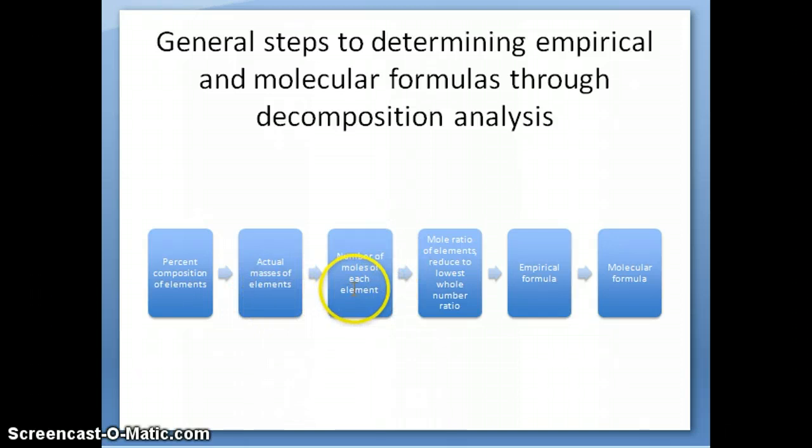Once you have the number of moles, then what you want to do is use the number of moles and relate it to all the other elements and divide them so that there will be a lowest whole number ratio among elements. We'll do this in an example in a second.